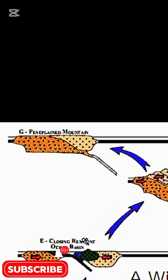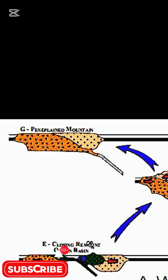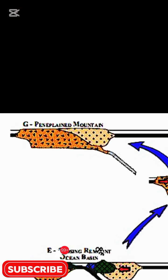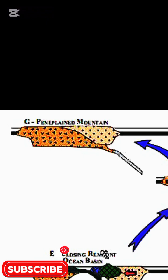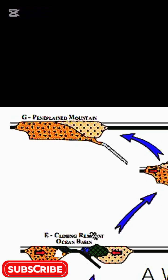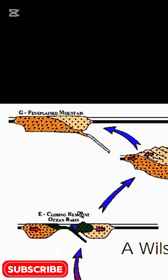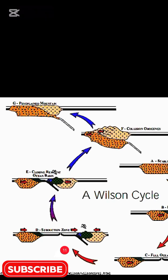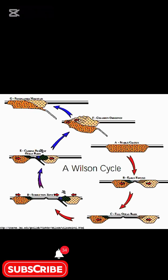From stage F to stage G, peneplain mountain erosion flattens the mountains over eons. Today's Appalachian Mountains, once as high as the Alps, are now worn to gentle hills due to erosion.